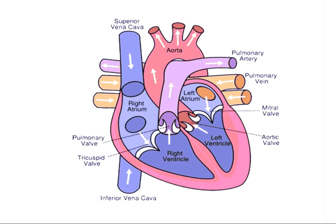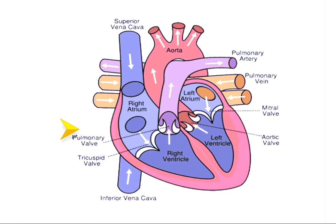The human heart is divided into four chambers: the right atrium, the right ventricle, the left atrium, and the left ventricle.